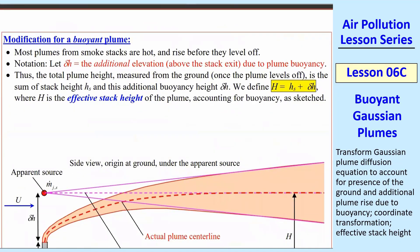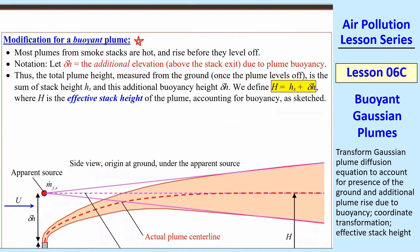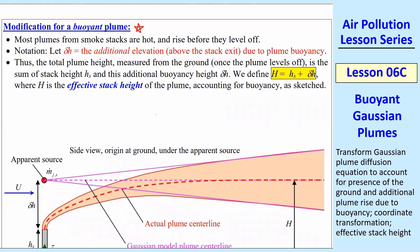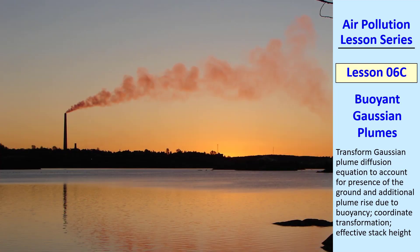Now we are going to modify additionally for a buoyant plume as promised. So what's a buoyant plume? Most plumes from smokestacks are hot, and they rise before they level off. We're going to call delta h the additional elevation above the stack exit due to plume buoyancy. This is a smoke plume from a very tall stack, and you can see that it is buoyant because it goes up and then it levels off here. So the stack height would be hs, and then the delta h would be that additional elevation due to buoyancy.